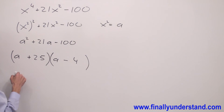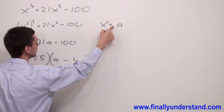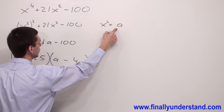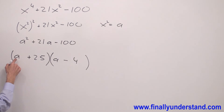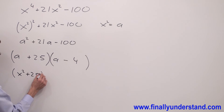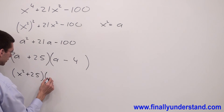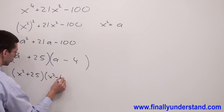This is not the solution yet, because we replaced x squared with a and we have to get back to x squared. So instead of a, I'm supposed to write x squared. That's why I'm going to write (x squared plus 25) times (x squared minus 4).